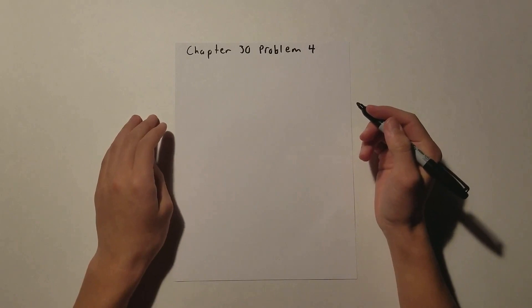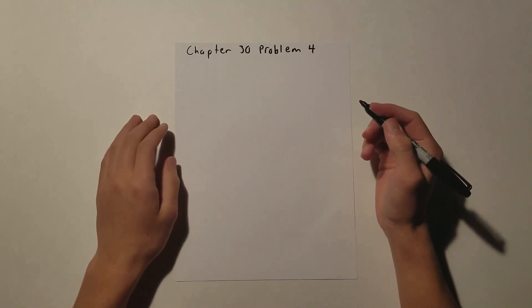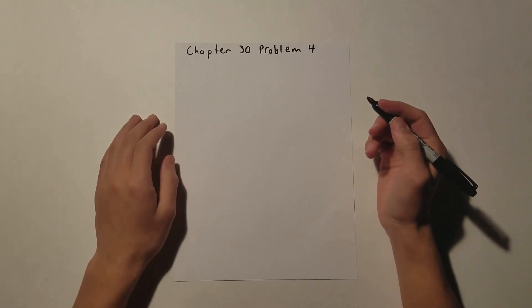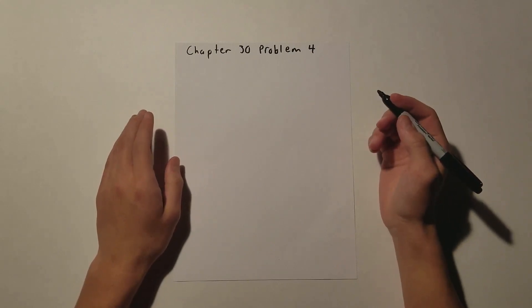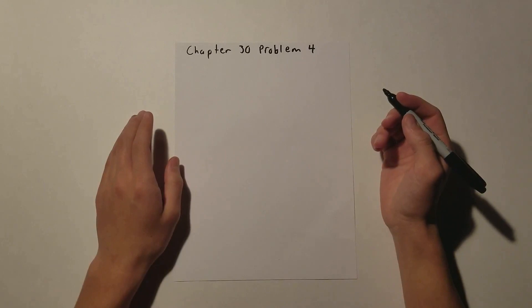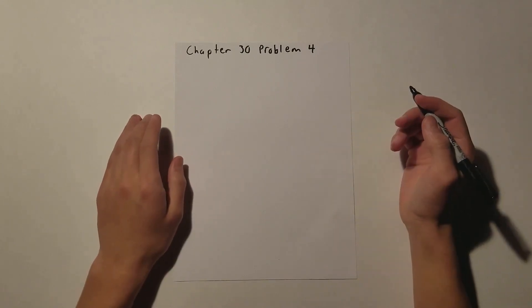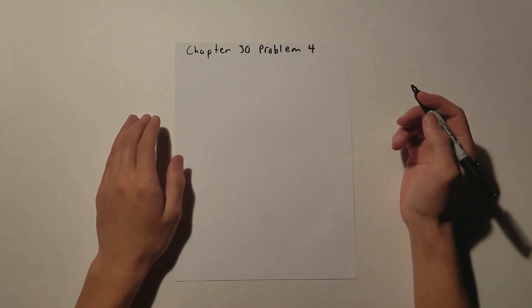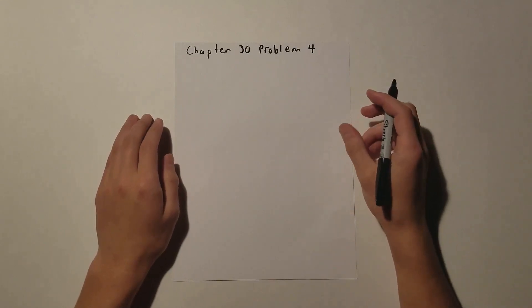Chapter 30 is all about induction, and number 4 talks about a conductor that is in a loop. We are given the radius, and it is perpendicular to a magnetic field, and we are given the rate that the loop changes. And we are asked to find the EMF that is induced in the loop at an instant.